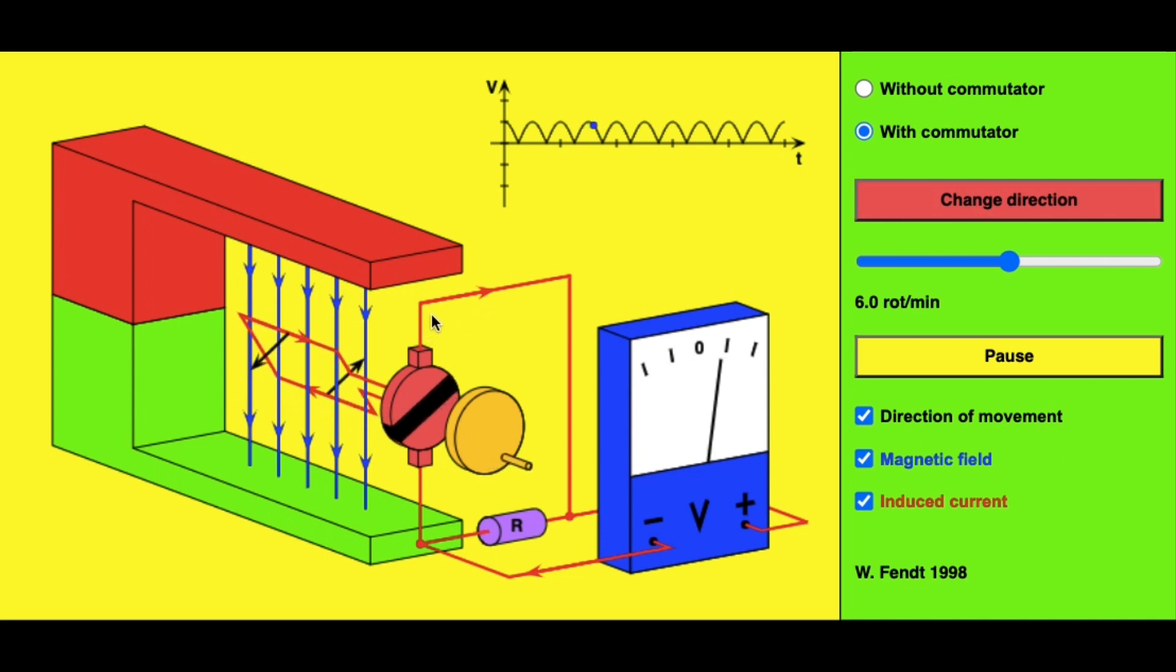As we can see here, the current in the external circuit is constantly flowing in the same direction. So we say that the split ring commutator converts alternating current in the internal circuit into direct current in the external circuit.